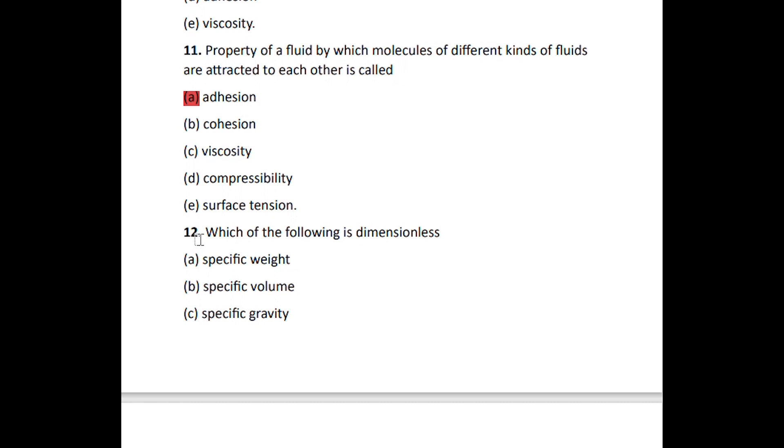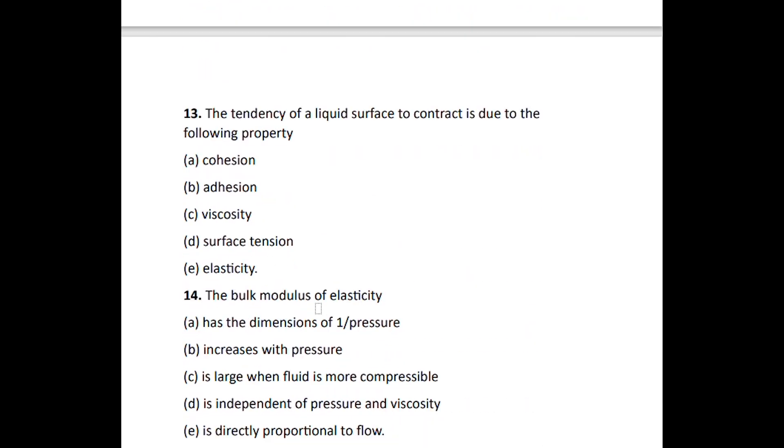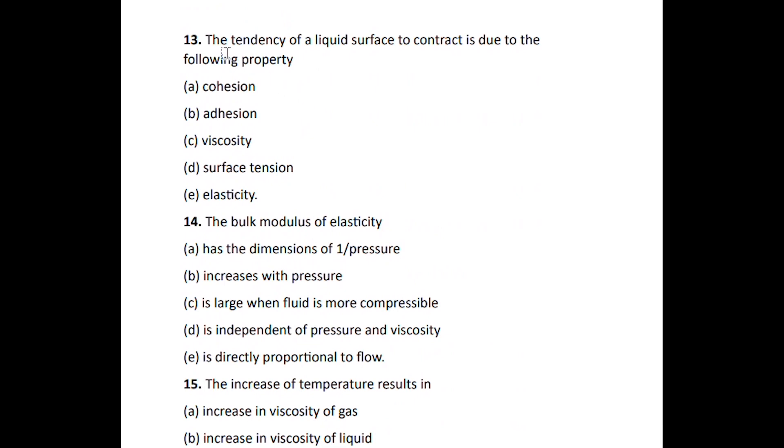Number twelve: which of the following is dimensionless, has no units? Specific gravity. The ratio of the density of a fluid to that of water at four degrees Celsius. Number thirteen: the tendency of a liquid surface to contract is due to the following property: surface tension. That is the ability of a liquid surface to contract, surface tension.